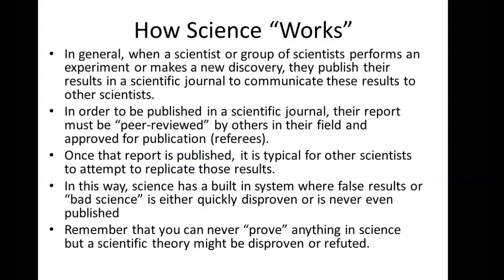This is a very brief explanation of how science works in practical terms. Generally speaking, if you're a scientist, you work by yourself or with a group. You perform an experiment, make a new discovery, analyze experimental results, and come up with a new hypothesis or scientific theory. Then you take your results and try to publish them in a scientific journal to communicate those results to other scientists.